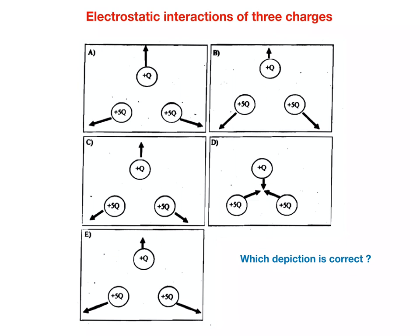It is important to understand how the simple situation involving two charges relates to the more complex situation where many charges interact or even charge distributions are present. All electrostatic interactions between charges are mutual and they superimpose according to the principle of linear superposition. This means the net force and net field vectors are the vector sum of all contributing individual force or field vectors. Vector addition must be applied to solve a simple problem concerning three charges: two with magnitude +5Q and one at the top with magnitude Q — all positively charged and repelling each other.